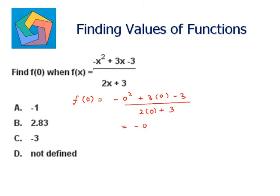Negative 0 plus 3 times 0 equals 0, minus 3 over 2 times 0 equals 0, plus 3. This simplifies to 0 minus 3 equals negative 3, over 0 plus 3 equals 3. Negative 3 over 3 equals negative 1. So the answer is A, negative 1.